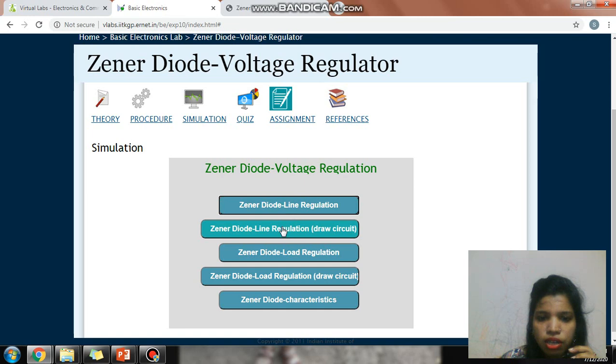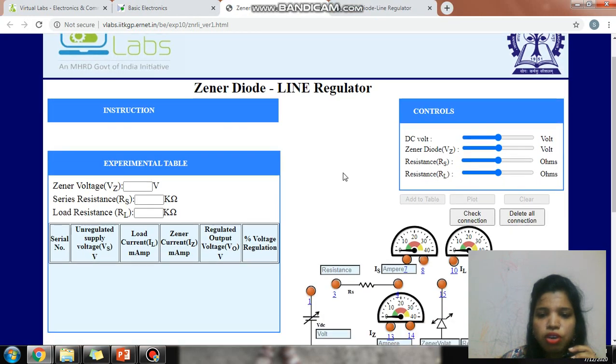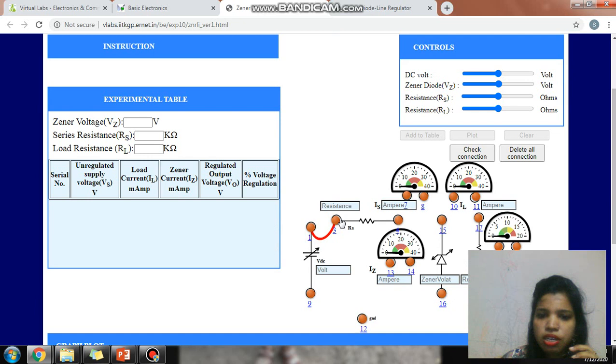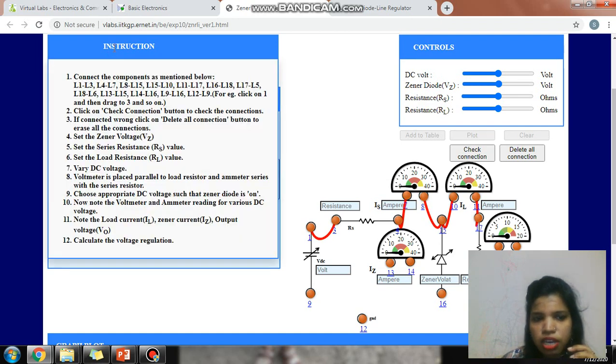Now the second part is Zener diode line regulation, draw circuit. Here you can draw the circuit. As per the circuit, you can make all the connections like this. Now it is a circle, so it will be wrong. Definitely I am deleting the connection and making this again. If you are having any doubt whether you are doing it right or not, the instruction box is there.